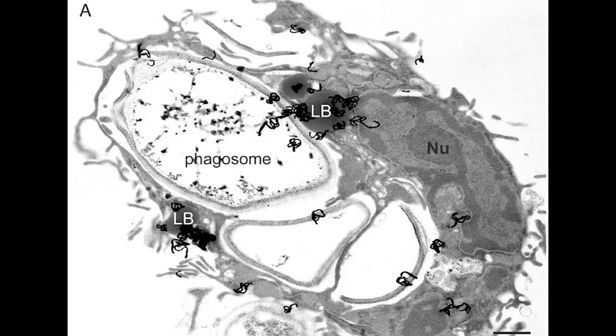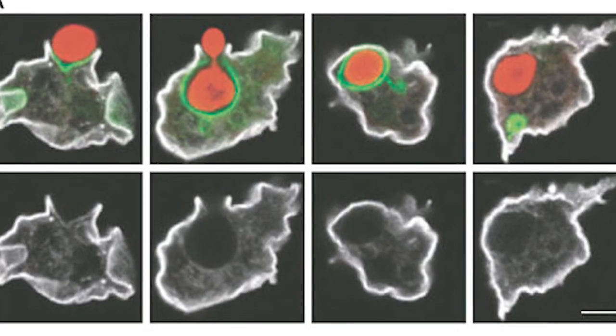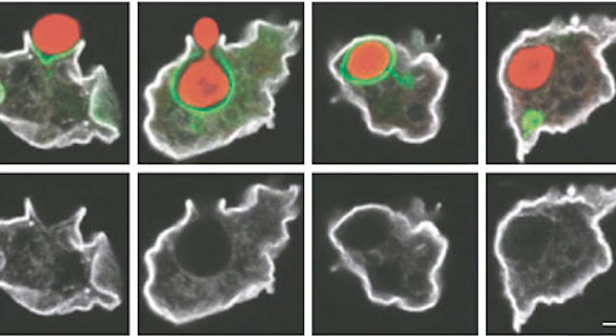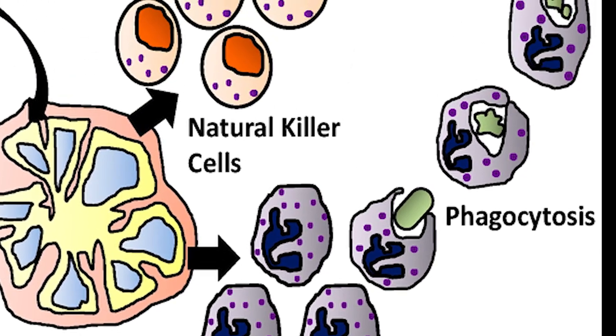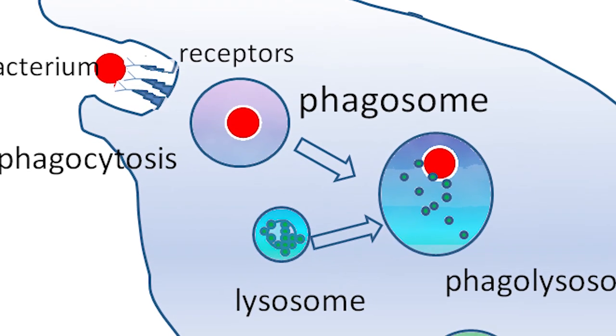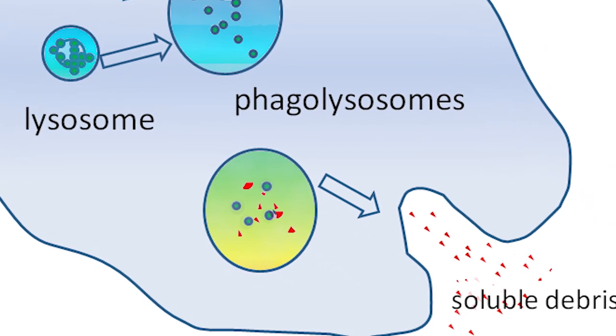Lactoferrin can also communicate with phagosomes — large cells in you that eat other cells. They can completely envelop bacterial cells, rapidly destroy them, recycle their proteins, take back any valuable metals they may have, and digest them whole. At the cellular level, iron is as valuable as gold, and your body is constantly at war with the bacteria in your own gut, making sure you win the war for iron. Always.